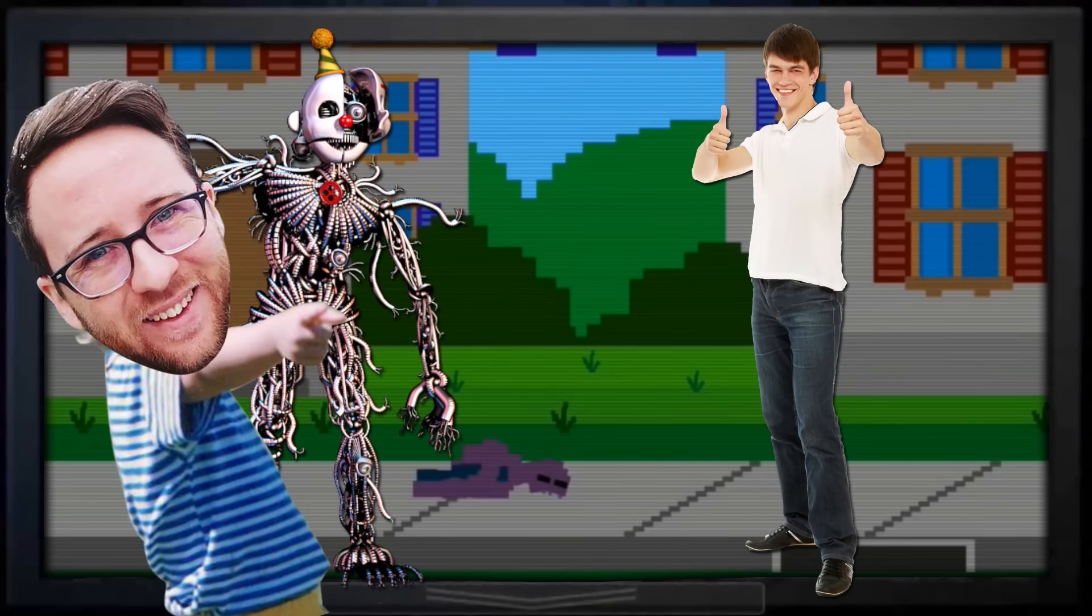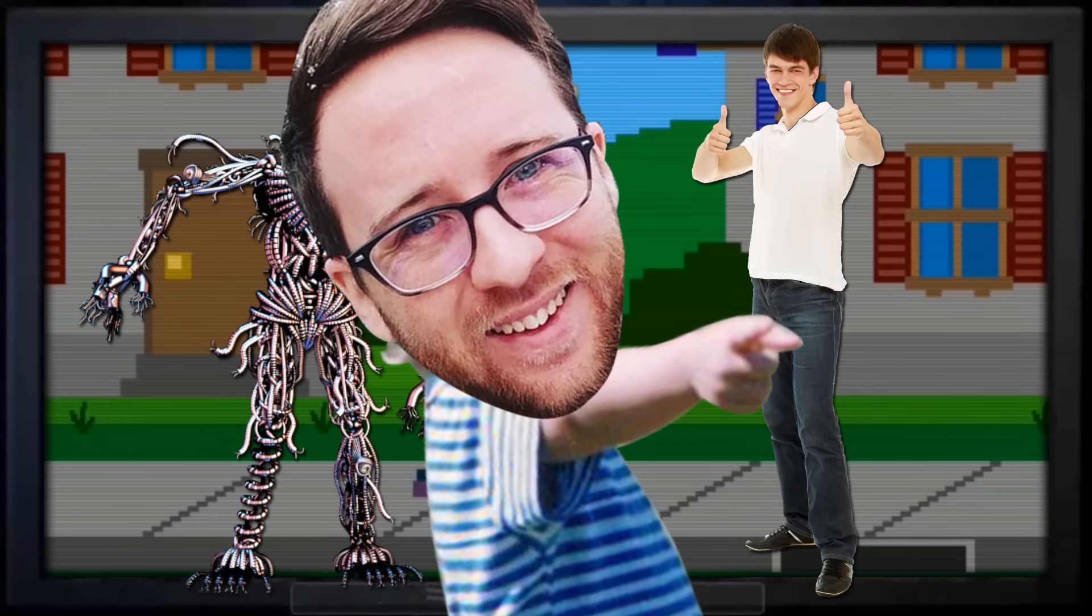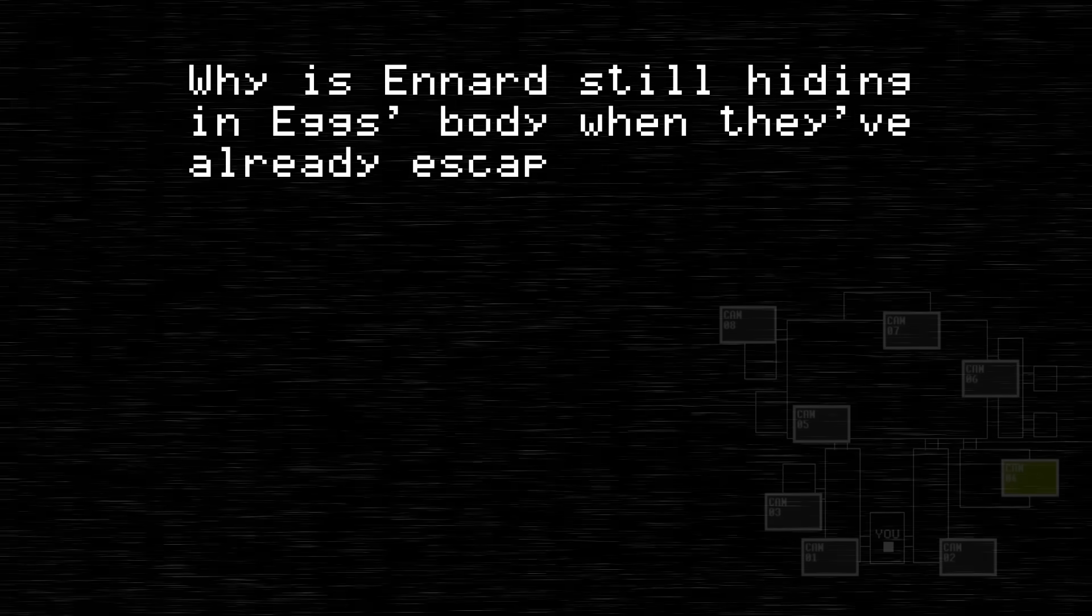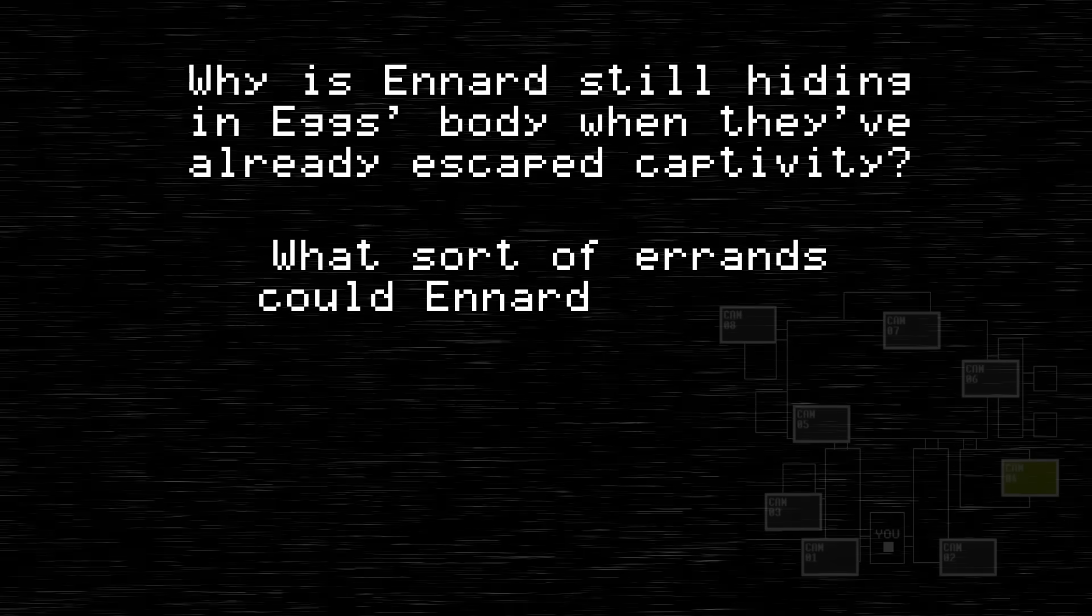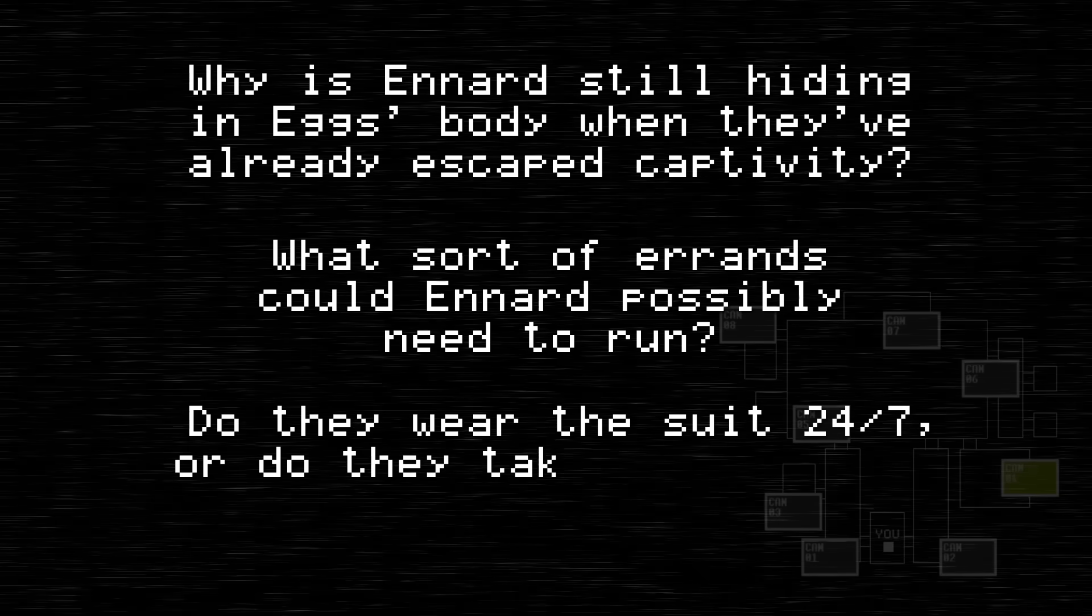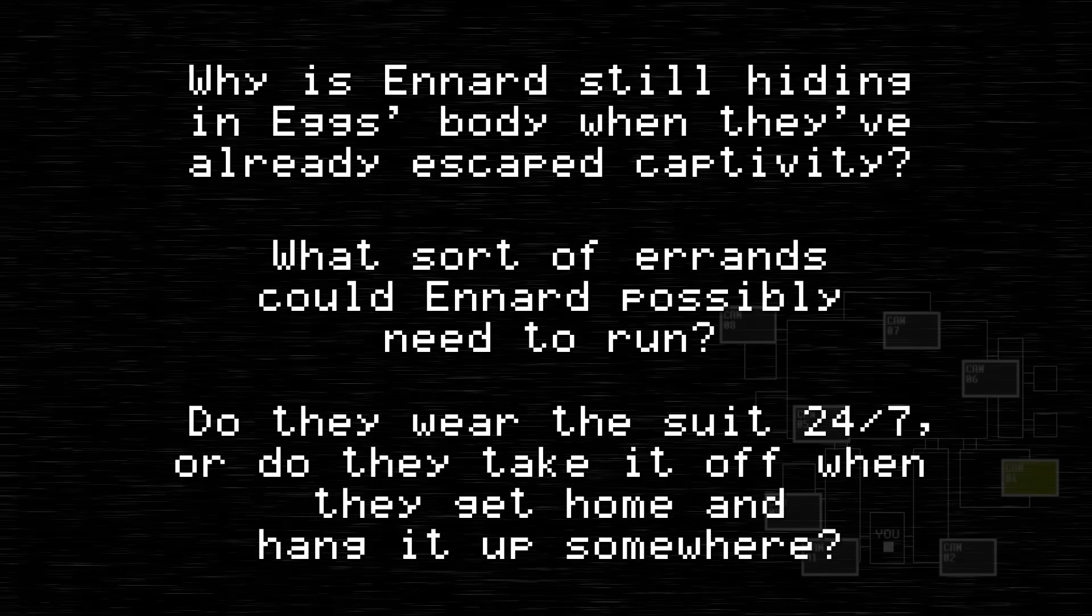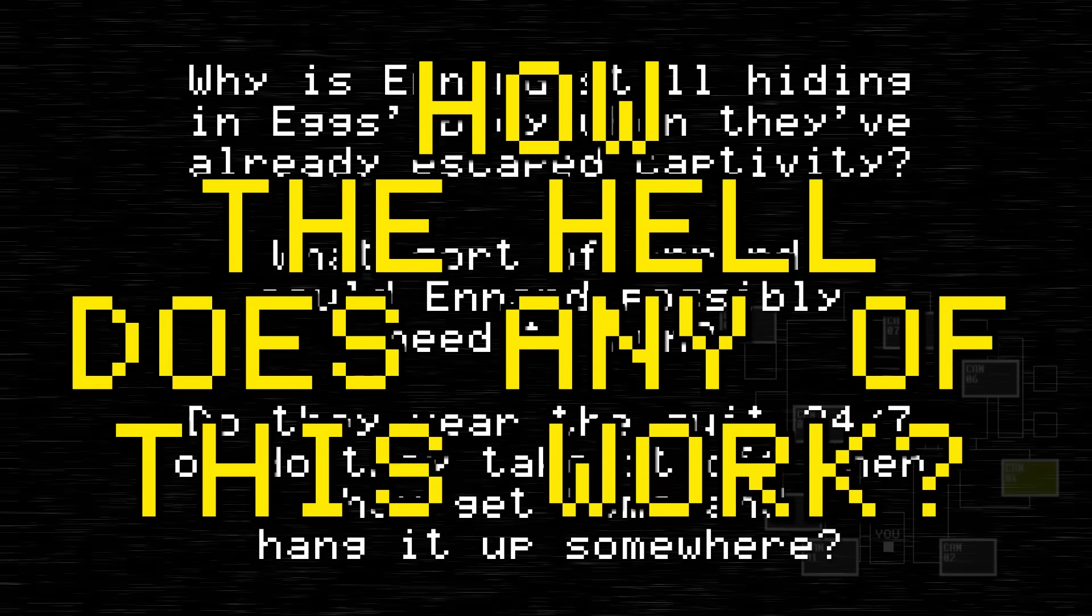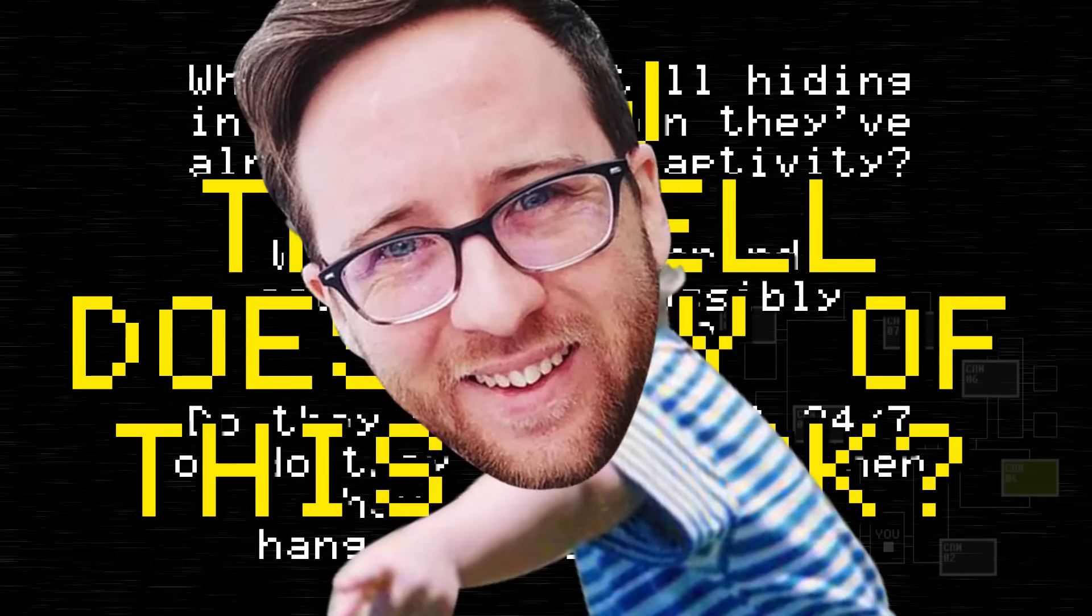And it's these scenes that got my SCIENCE BRAIN all afire because they raise so many more questions than they answer. Like, why is Ennard still hiding in Egg's body when they've already escaped captivity? What sort of errands could Ennard possibly need to run? Do they wear the suit 24-7, or do they take it off when they get home and hang it up somewhere? But more important than all of this, how the hell does any of this work? HOW?! MY BRAIN NEEDS TO KNOW HOW! And so, I figured it out, and believe me, the answer to how a human skinsuit puppet works is amazing, and it may, in fact, surprise you.